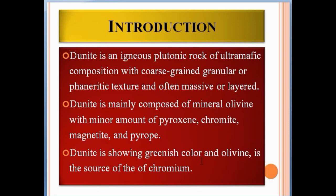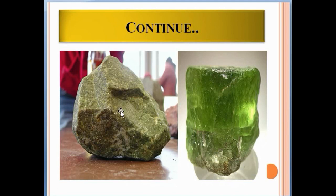Dunite shows a greenish color, and olivine is the source of chromium elements. Chromium is actually often derived from chromite, which is always associated with ultramafic rocks. As you can see here, this is the dunite — notice the greenish color.